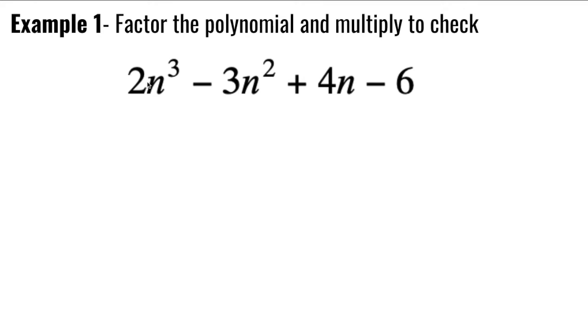As you can see in example one, we have one, two, three, and four terms. What I notice about all four of these terms is that none of them has anything in common. The first two might have a common factor and the second two might, but there's nothing that I can factor out of all four of these. So there is a way to factor when you have a four term polynomial and that is called grouping.